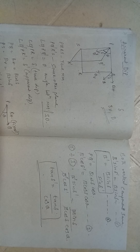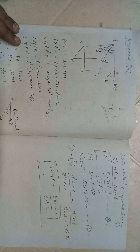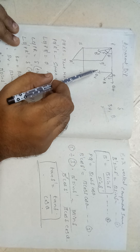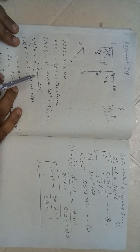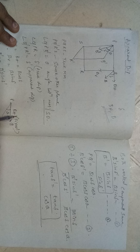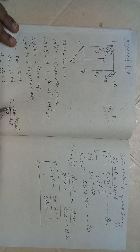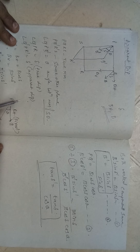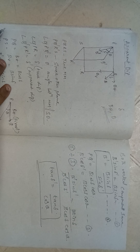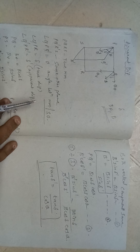Let's discuss the concept of apparent dip. In the previous video we studied dip, declination, etc. as components of Earth's magnetic field. The dip that we studied there is called true dip. Here we are going to study about apparent dip and the relationship of apparent dip with the true dip.